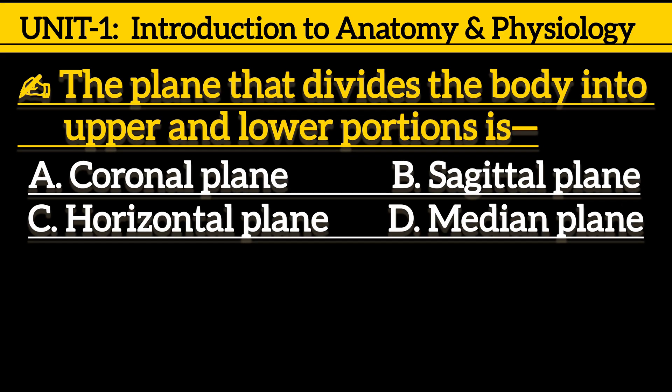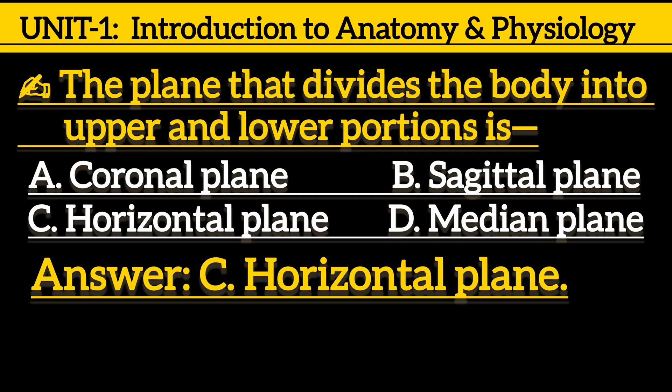Next one is, the plane that divides the body into upper and lower portions is: option A, coronal plane; option B, sagittal plane; option C, horizontal plane; option D, median plane. Correct answer is option C, horizontal plane.